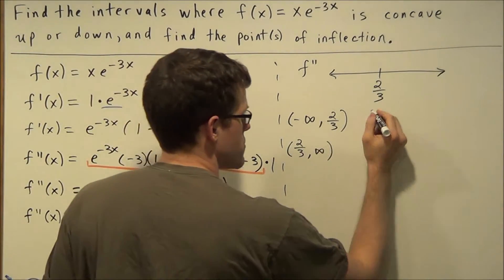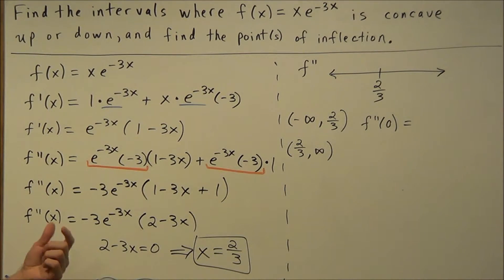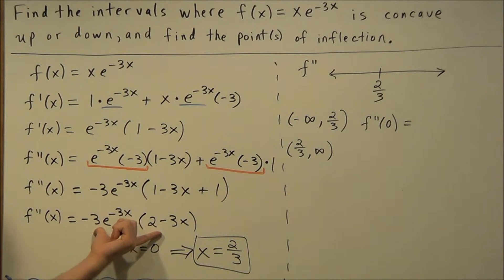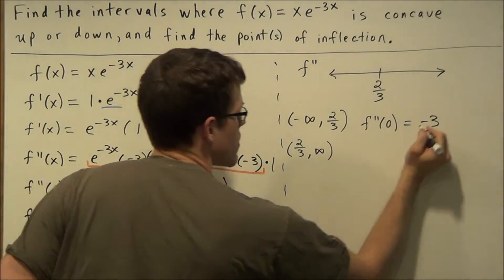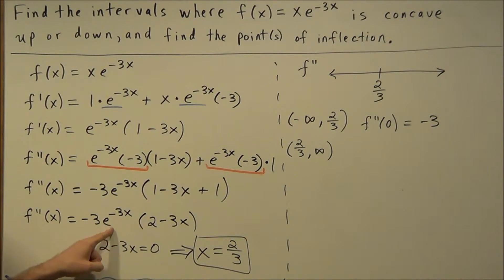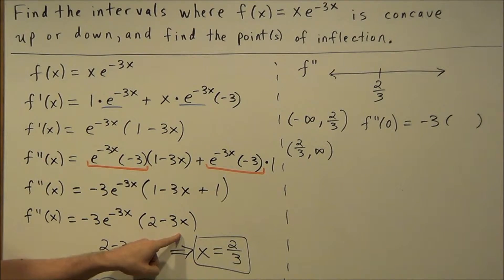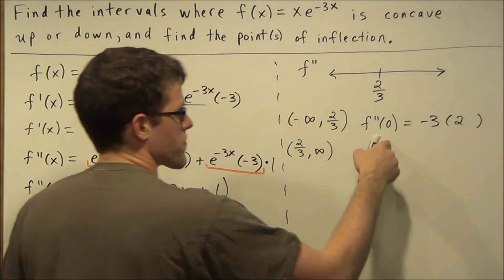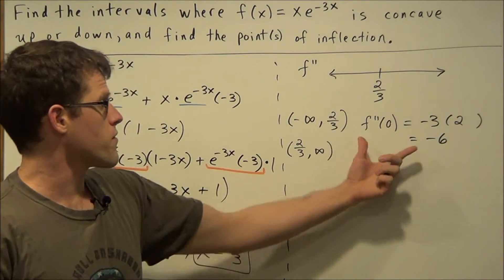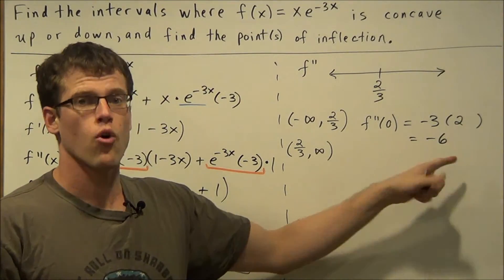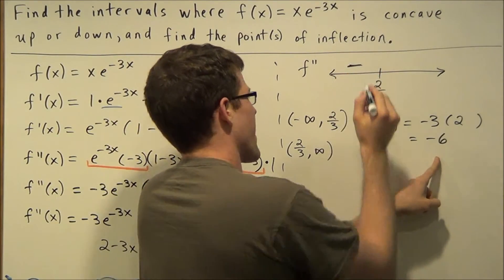If we plug in 0 for the first interval, we plug it into the factored form of our second derivative — it's always easier to use the factored form. We have negative 3 times e to the negative 3 times 0, which gives us 1, times 2 minus 3 times 0, which is 2. So f double prime of 0 is negative 6. We don't care about the value here, only the sign, so this tells us the first interval is labeled negative.